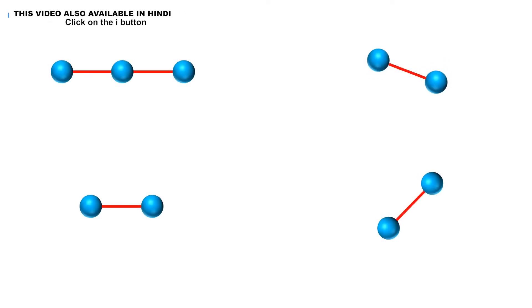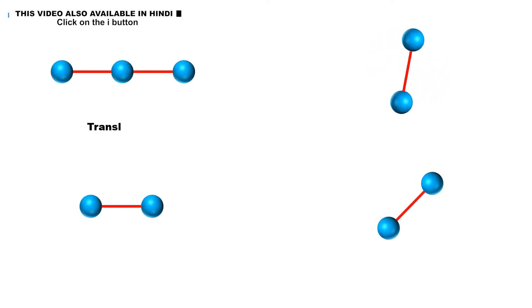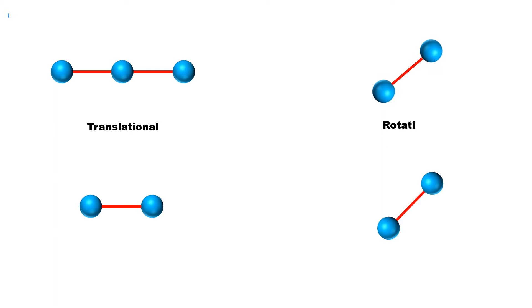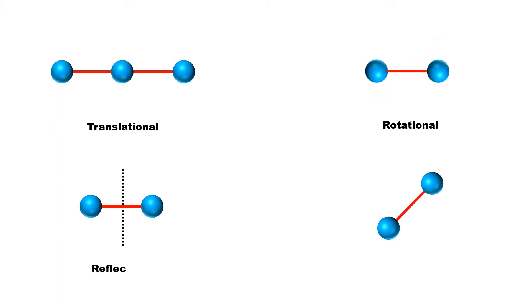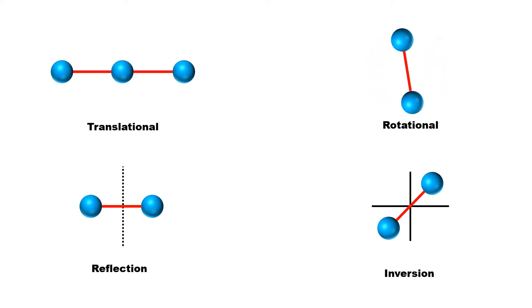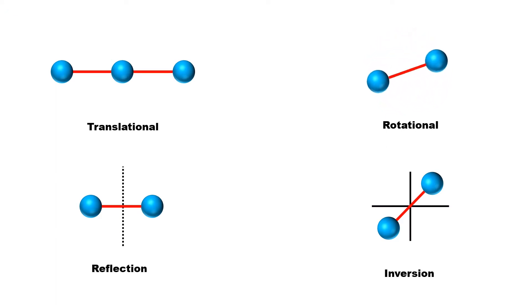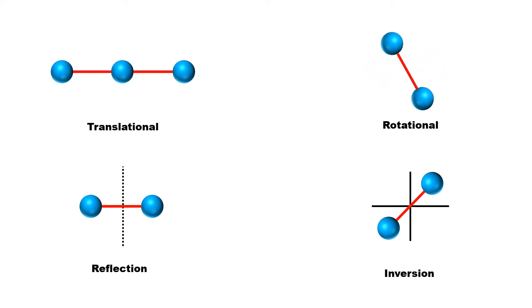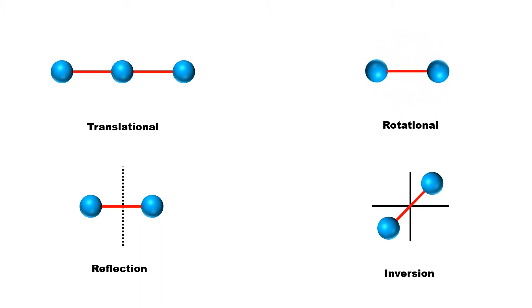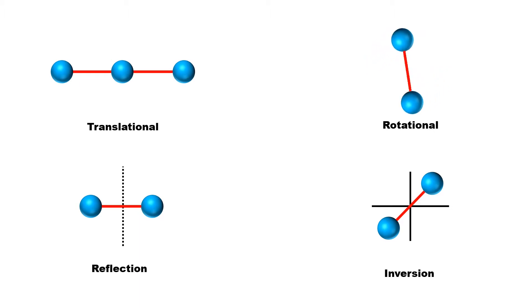There are four types of symmetries in a crystal: translational, rotational, reflection, and inversion symmetry. These four symmetries together form a unit cell of a crystal. In this video on crystal structure, we will learn about the four symmetries found in crystals.